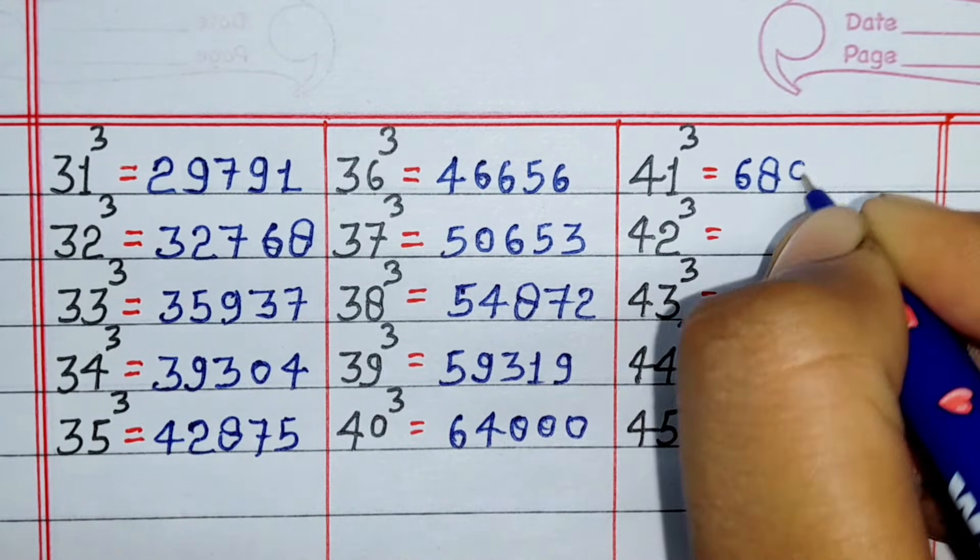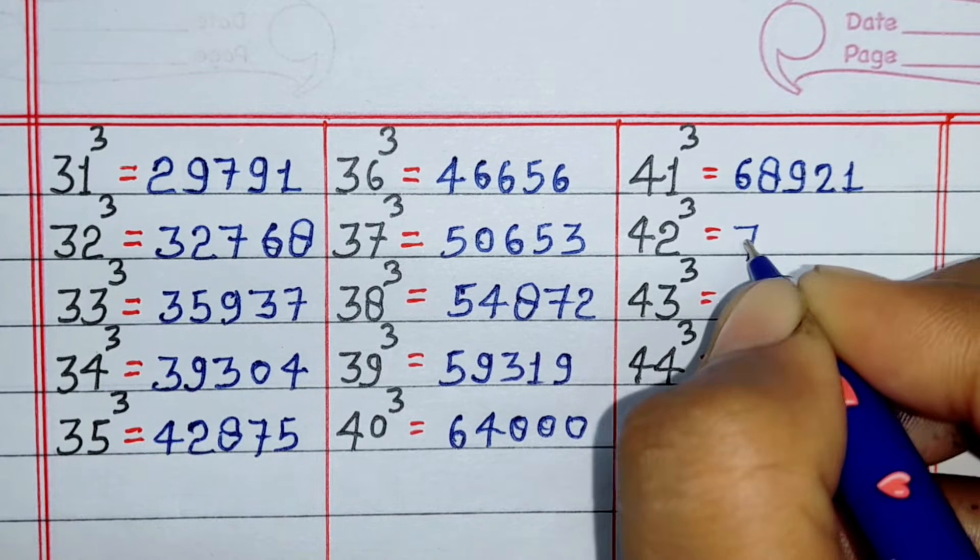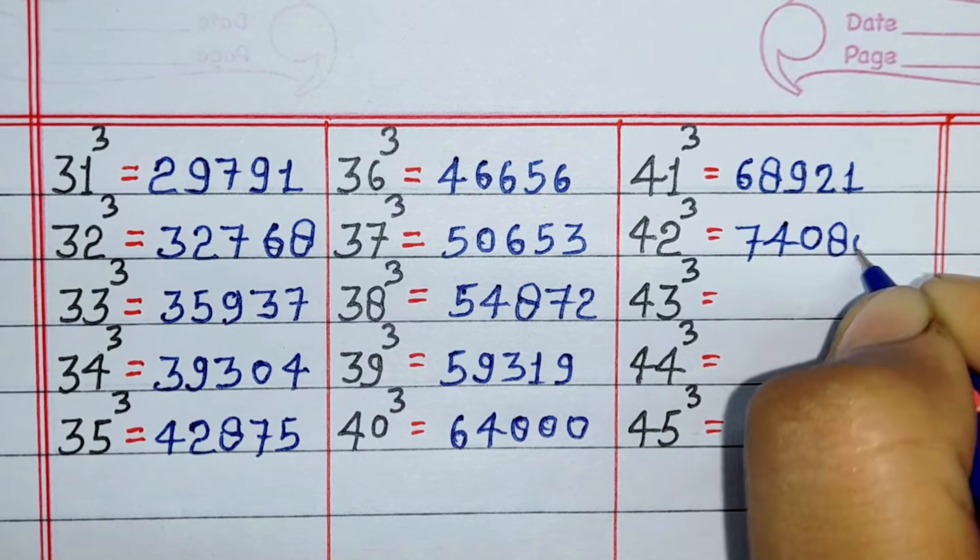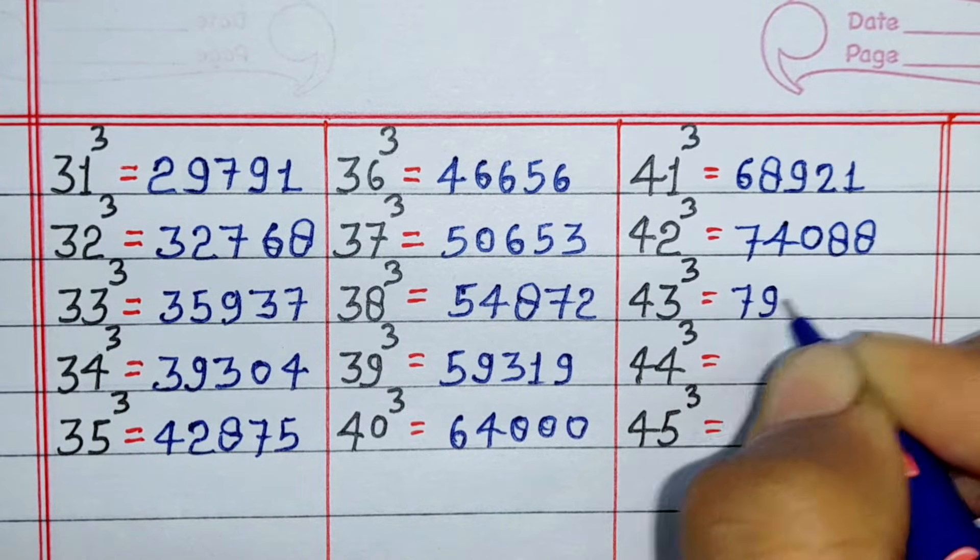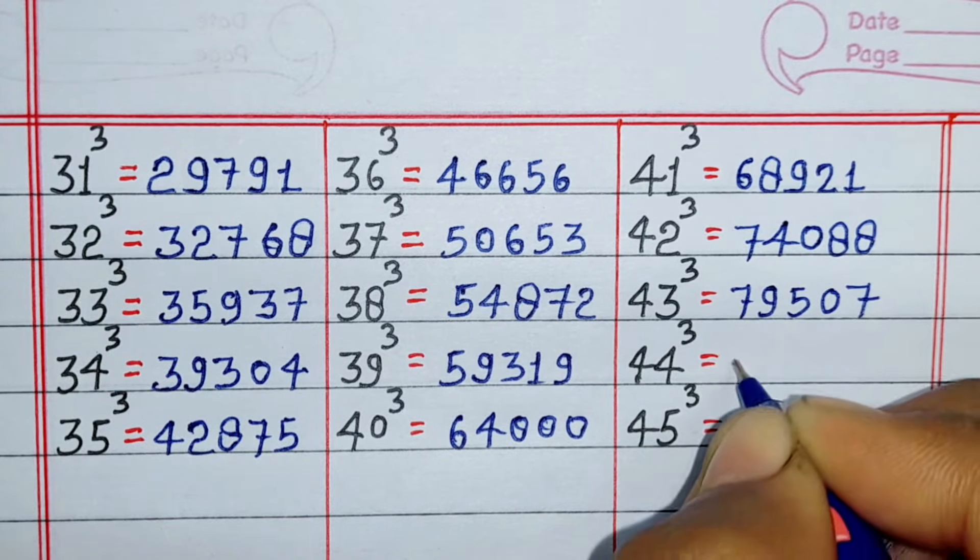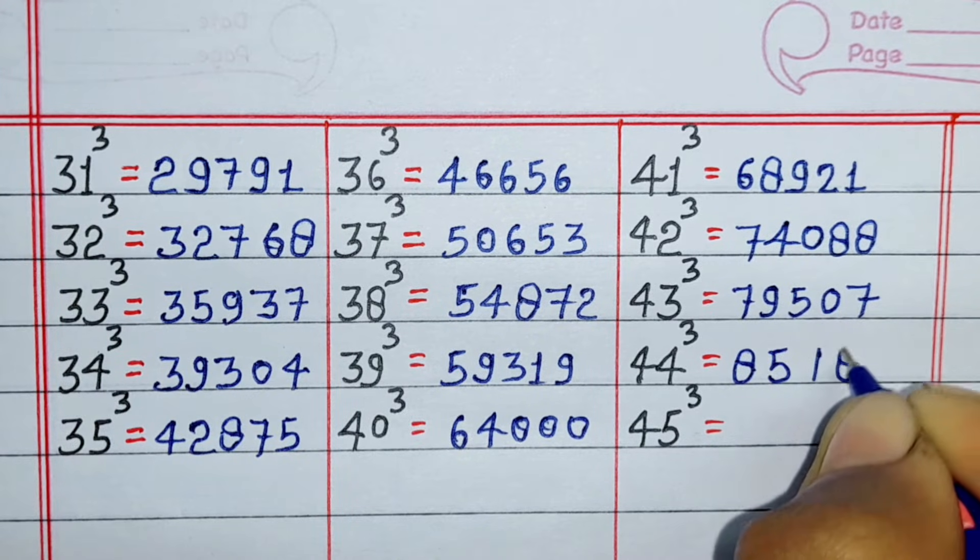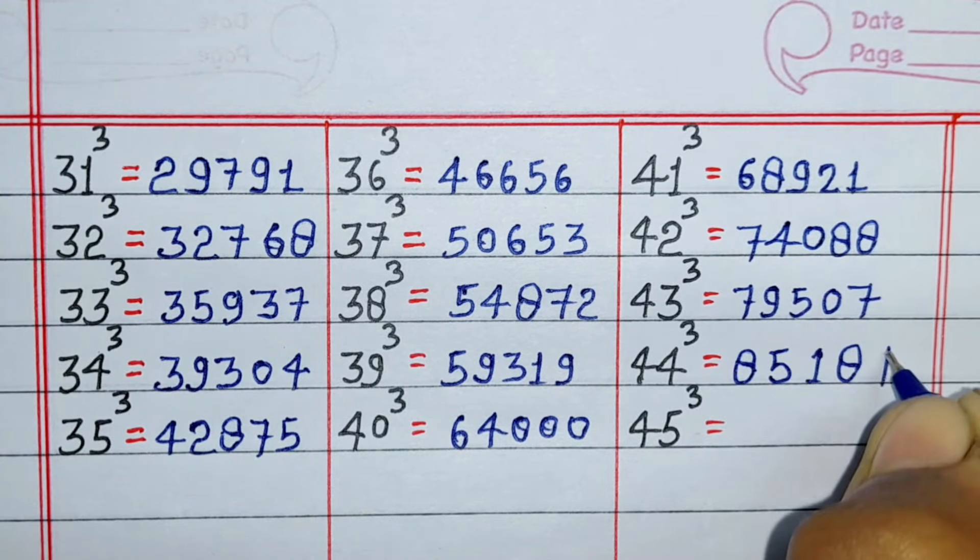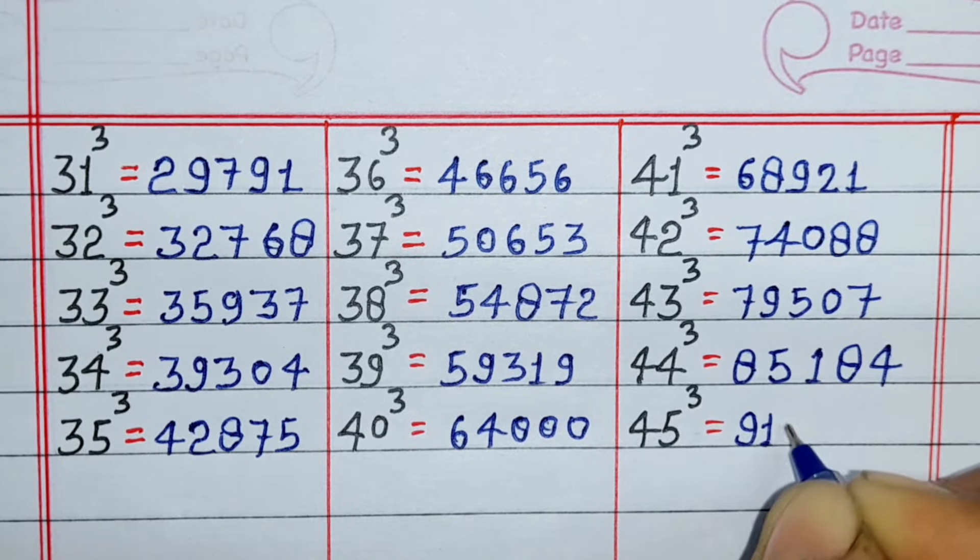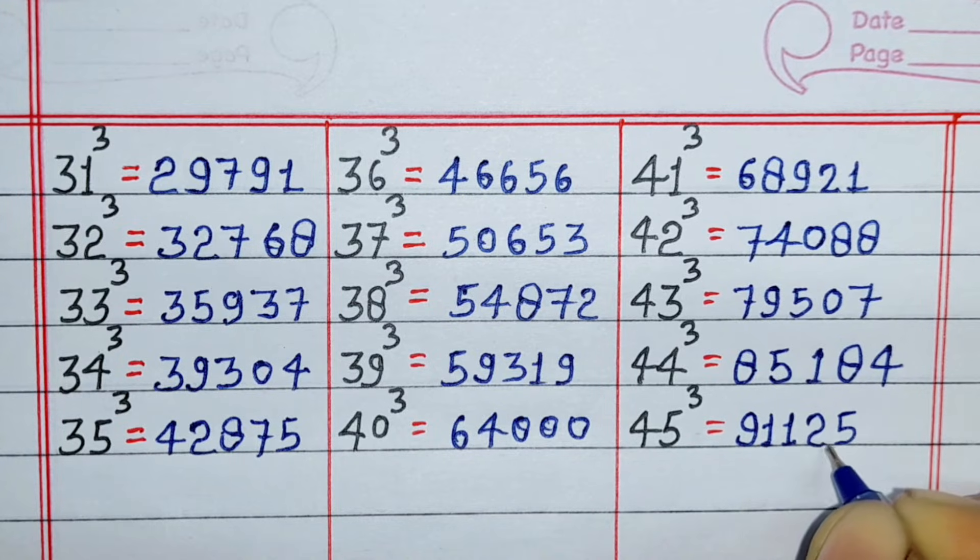Cube of 41 is 68921, cube of 42 is 74088, cube of 43 is 79507, cube of 44 is 85184, cube of 45 is 91125.